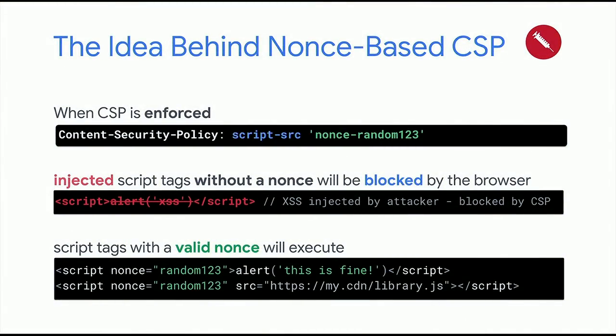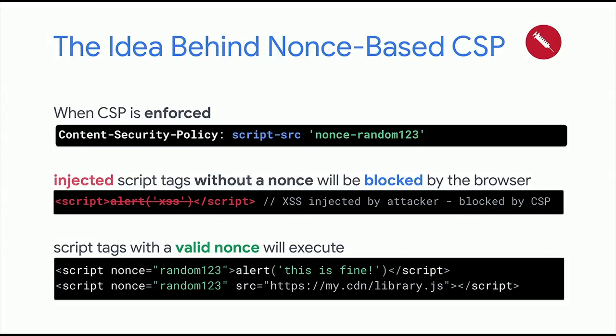What is the idea behind nonce-based CSP? A nonce is a random token that is meant to be not guessable, and very importantly, this value changes for every response. In order to allow a script to execute on your website, you must set a nonce attribute on every script tag, and the value of that nonce attribute has to match the value of the nonce in the content security policy. If an attacker injects a script tag via a cross-site scripting vulnerability, they will not know the nonce, and the browser will block the execution of that script tag — mitigating the consequences of the XSS vulnerability.